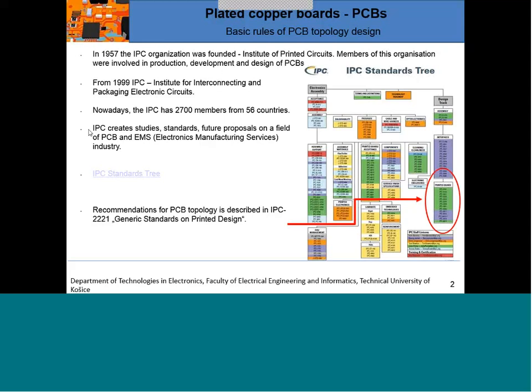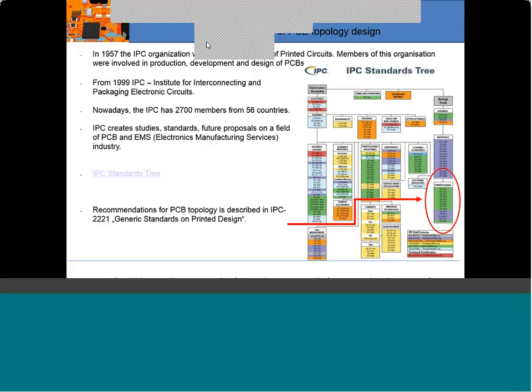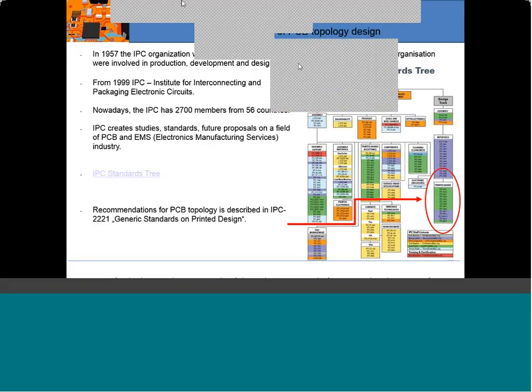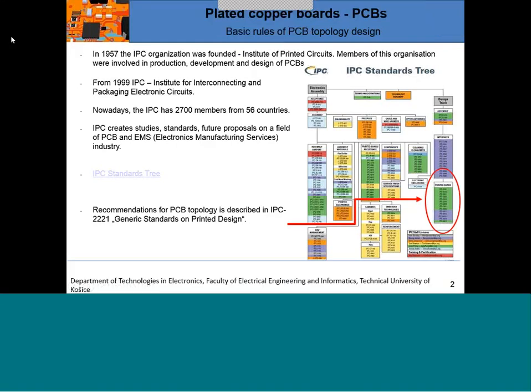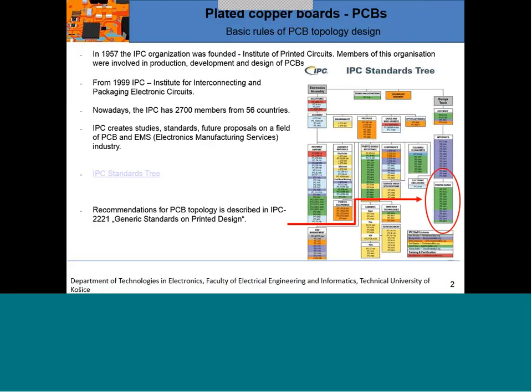That's why as soon as the first PCBs arrived on market in 1957, the IPC organization was founded — the Institute of Printed Circuits. Almost everybody who became a member accepted some basic rules and declared they used certain standards, which became mutual expectations and made all production of electronics much more consistent and effective. In 1999, the IPC abbreviation changed to Institute for Interconnecting and Packaging of Electronic Circuits.